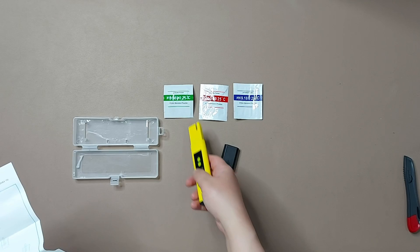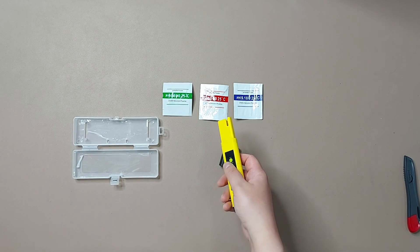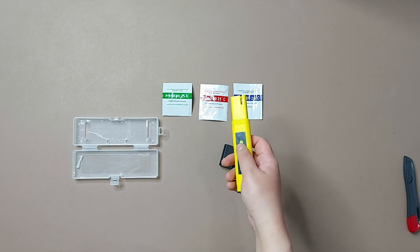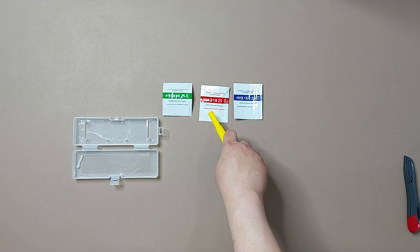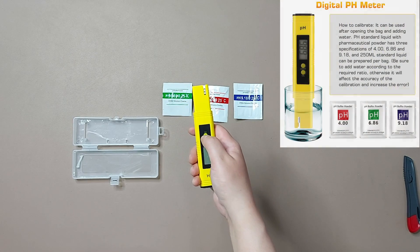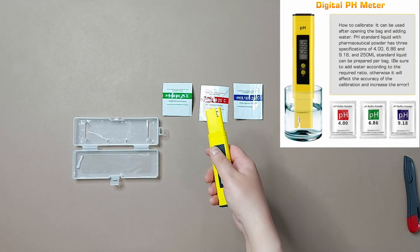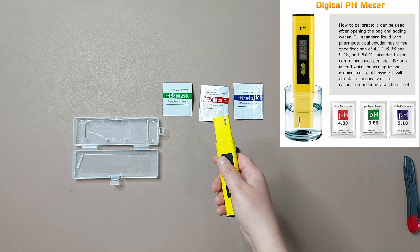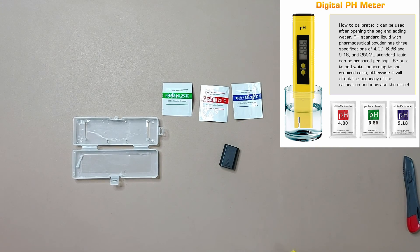Then we will clean the electrode again, dry it, and measure the pH 4.0 solution. Press the calibration button - it will flash three times, then it will finish the pH 4.0 calibration. And repeat again for the pH 9.18 calibration.